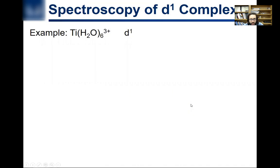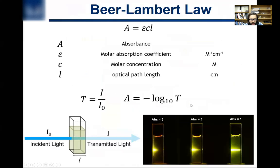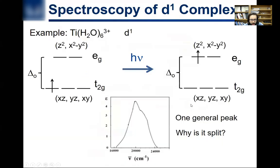So let's look at the spectroscopy of a d1 complex, this titanium complex. We know that d1 complex means that it's going to have one electron in the T2G orbital. In a T2G orbital, there's this delta O.